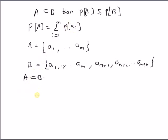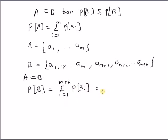From this theorem, we know that the probability of A is equal to the sum. We can also write that the probability of B is equal to the summation i equal to 1 to m+k of probability of Ai. This sum can be split as: summation i equal to 1 to m of P(Ai), plus summation i equal to m+1 to m+k of P(Ai).